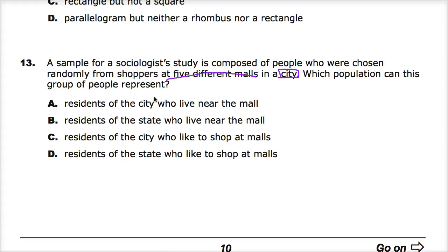Anyway, we're locked in by the sample in the city and by the fact they went to five different malls. So let's look and see what populations it might represent. Our population would be the larger group instead of just the smaller group of the sample.